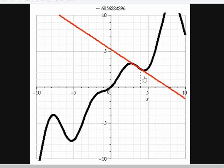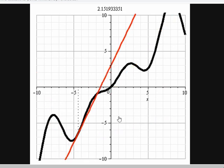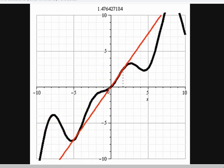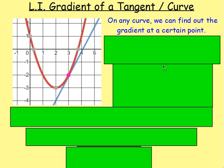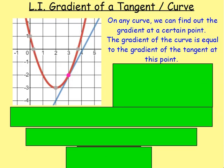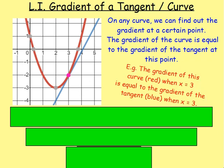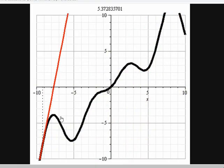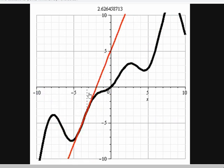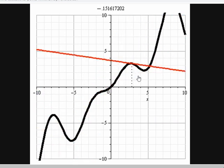This dotted line drawn in is the x value. So at different x values you can see the gradient of the curve or the gradient of the tangent is totally different. We can say that the gradient of the curve is equal to the gradient of the tangent at that point. Looking at this example, the gradient of this curve in red when x equals 3 is equal to the gradient of the tangent in blue when x equals 3.